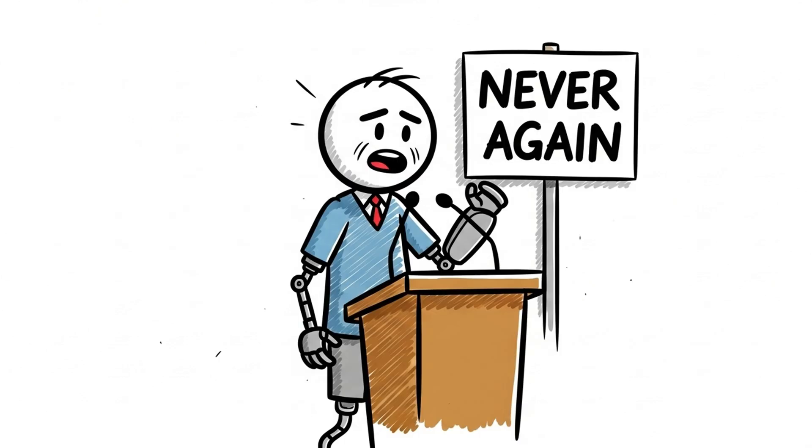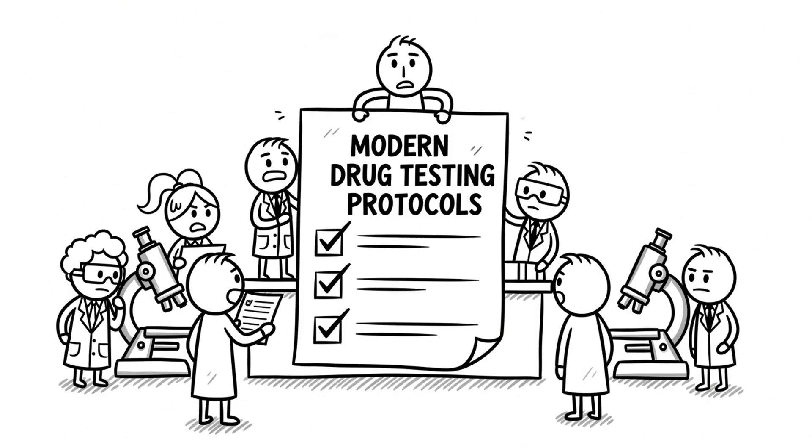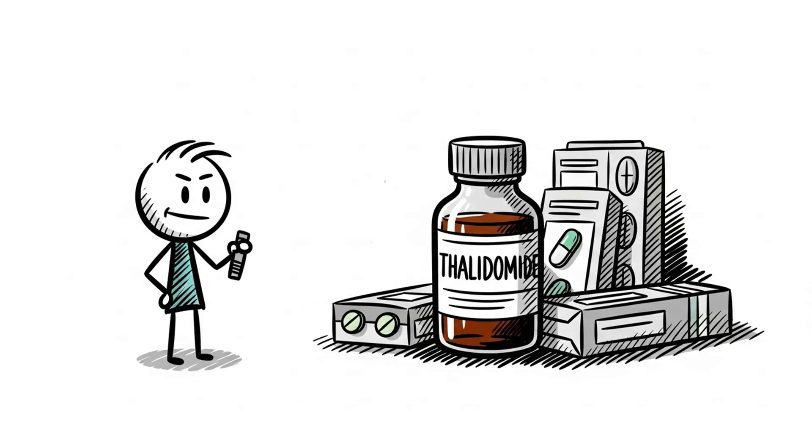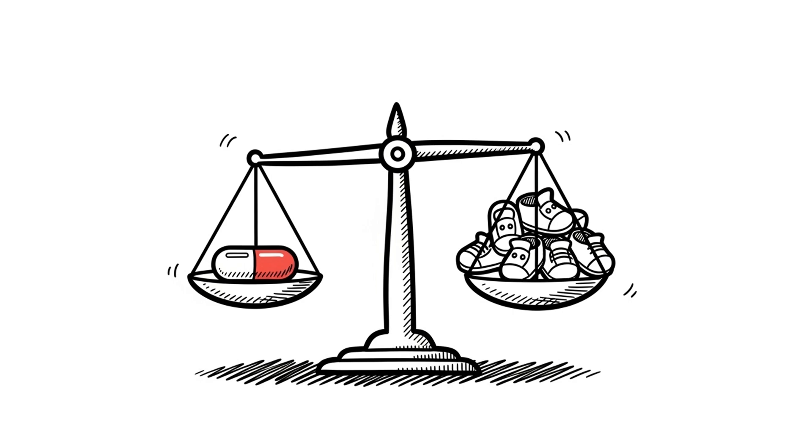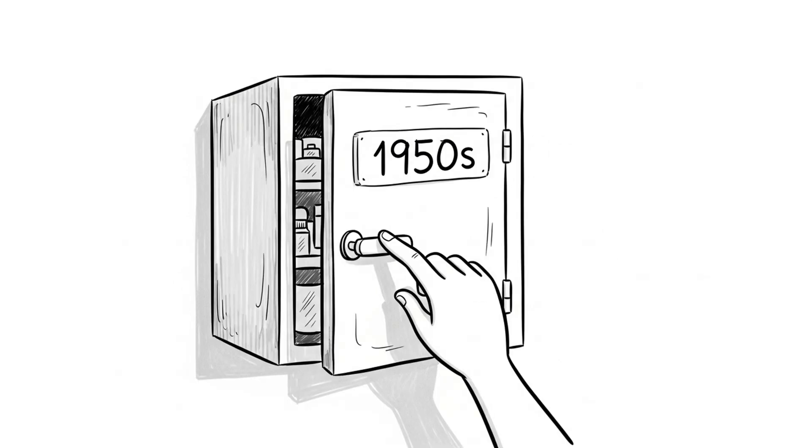Today, survivors live with the impact, but many became powerful advocates. The disaster reshaped how we test drugs. It became the catalyst for stricter global drug regulations. And thalidomide? It never truly disappeared. In small doses, it's now used for diseases like leprosy and multiple myeloma, but only under tight controls. It's a haunting reminder that even good intentions, if unchecked, can spiral into tragedy. The thalidomide tragedy wasn't just about science. It was about trust and what happens when that trust is broken.